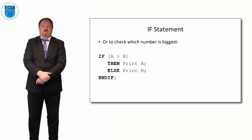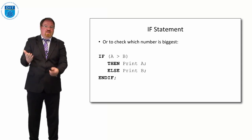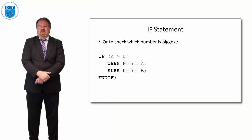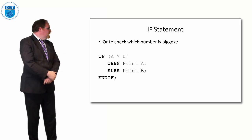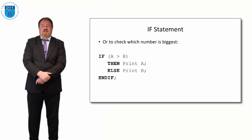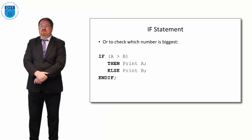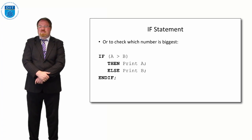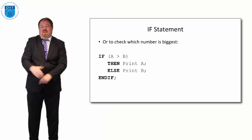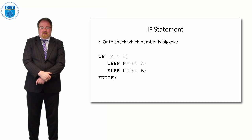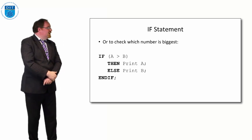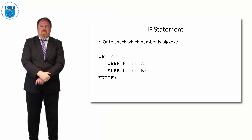If we want to check two numbers and check which one is biggest, we could say: if a is bigger than b, then print a, else print b. So if a is 5 and b is 3, a is bigger than b so we print 5. If a is 4 and b is 26, a is not bigger than b so we print 26. If both numbers are equal — say a is 5 and b is 5 — then a is not bigger than b so we print b, which is also 5. This simple program prints the bigger of two numbers by checking the condition.